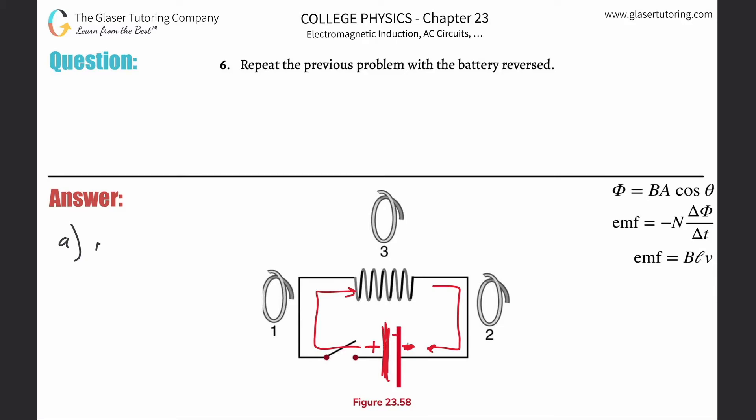For coil number one here it should be clockwise. Coil two is going to be clockwise, and coil three it's none. The answer for letter b on the prior problem should all be none because there is no change in magnetic field.